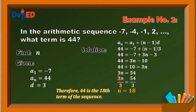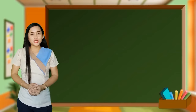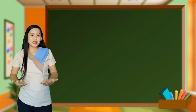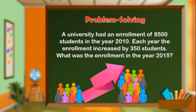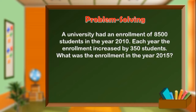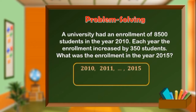There are lots of real-life situations that involve arithmetic sequence. For instance, a university had an enrollment of 8,500 students in the year 2010. Each year, the enrollment increased by 350 students. What was the enrollment in the year 2015? To visualize the problem, let's make a timeline. The year 2010 corresponds to A1, the year 2011 is A2, and so on until year 2015 as the 6th term or A6. The population at first is 8,500, thus A1 is equal to 8,500. Every year it increases by 350, so the common difference is 350.